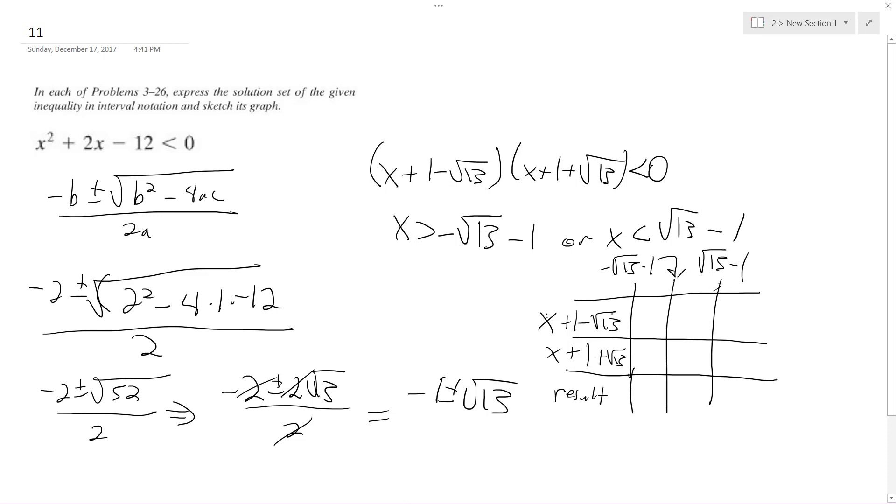So if it's less than this, testing the regions gives positive, negative, positive. So we get plus here, negative here, plus here.